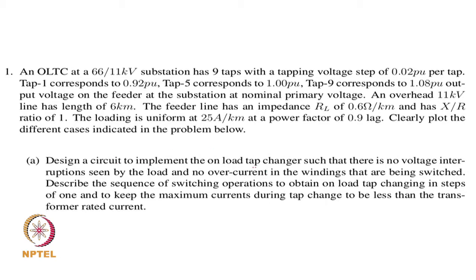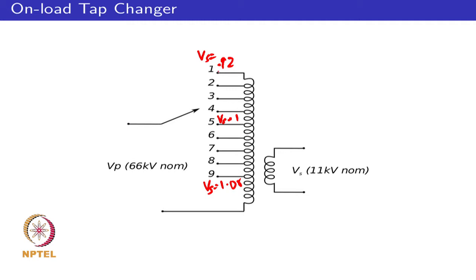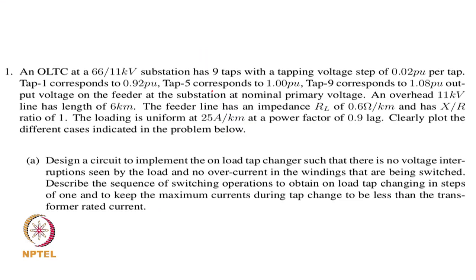We will look at the circuit implementation of the tap changer and how on-load tap changing is achieved. If you want to change taps — say from tap 1 to tap 2 — without interruption, simultaneously contacting both throws shorts a coil, which can result in large currents in the shorted coil. The question is: what is the sequence of operations to limit the maximum current during tap change to about 1 per unit rated current?